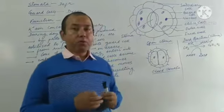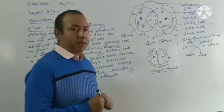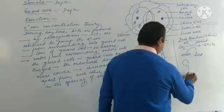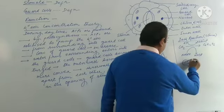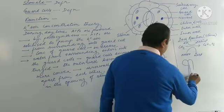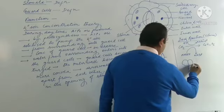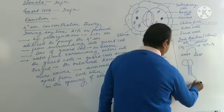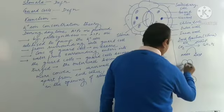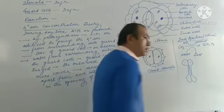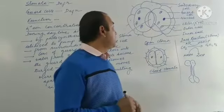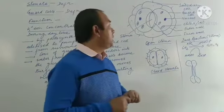In monocot plants, these guard cells are dumbbell-shaped — meaning they look like a bone-shaped structure. In monocots the guard cells are dumbbell-shaped, whereas in dicots they are kidney-shaped.